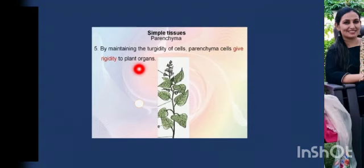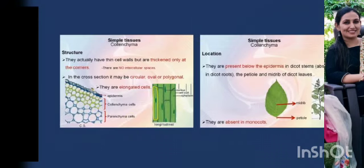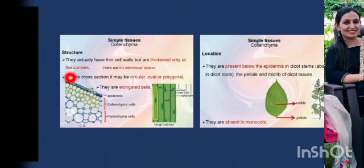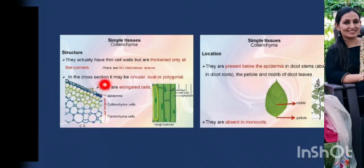Parenchyma also provides mechanical strength to plants by maintaining high osmotic pressures. The next simple permanent tissue is colenchyma. In Greek, 'kola' means glue and 'enchyma' means an infusion. Colenchyma is a living tissue like parenchyma. The cells have thin walls but are thickened only at the corners, with no intercellular spaces — meaning the cells are compactly arranged. In cross section, the cells may appear circular, oval, polygonal, or elongated.